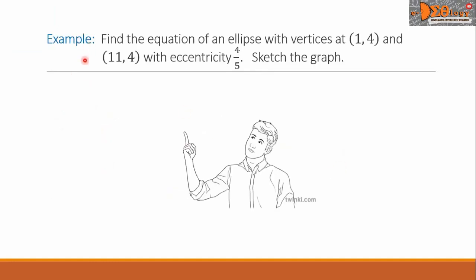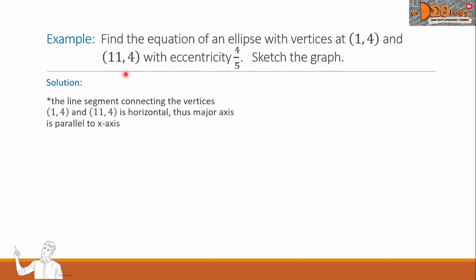Let us see this example: Find the equation of an ellipse with vertices at (1, 4) and (11, 4), with eccentricity 4 over 5. Sketch the graph. For our solution, based on the given, the line segment connecting the vertices (1, 4) and (11, 4) is horizontal. It means the major axis is parallel to the x-axis. The eccentricity is 4 over 5, which equals C over A. It means the value of C is 4 and the value of A equals 5.